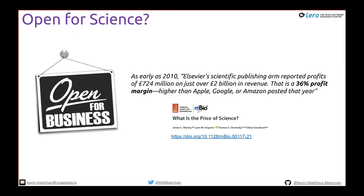Currently it seems open science is really open for business. As early as 2010, Elsevier's scientific publishing arm reported profits of 724 million on just over 2 billion in revenue — that's a 36% profit margin, higher than Apple, Google, or Amazon. They're not adding much value: we typeset and write the paper, we review it for free, editors often aren't paid. They essentially host the PDF on a website and charge people for it.